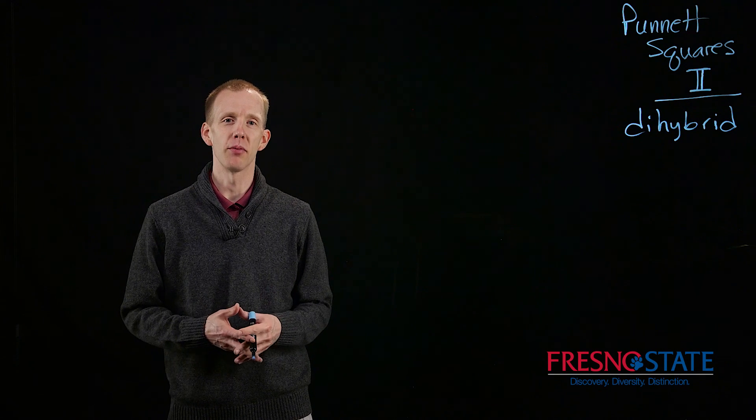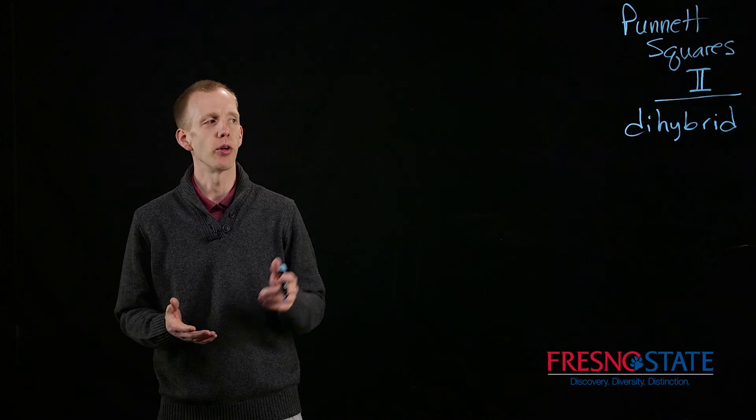Now we're going to look at an even more complicated Punnett square, the dihybrid cross, shown here.